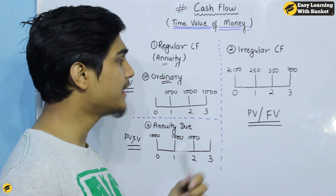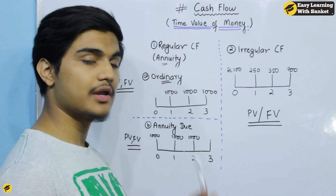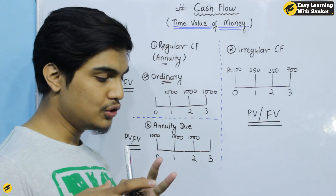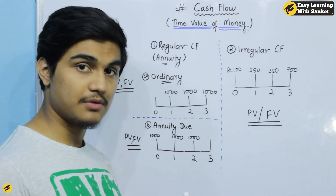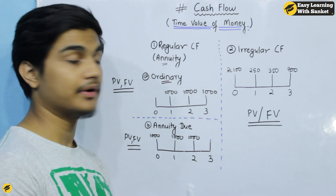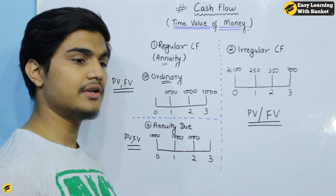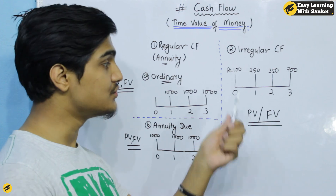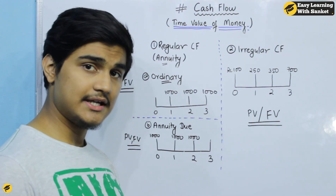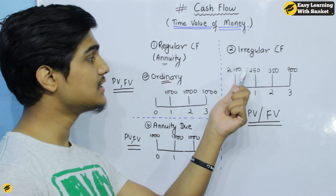Cash flow at time zero means the starting period — it is the starting phase, the first date of the first period. Then I will give you the next date of the first phase.